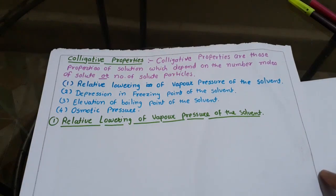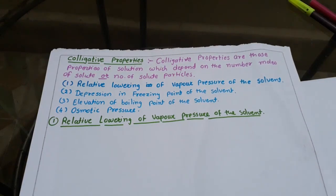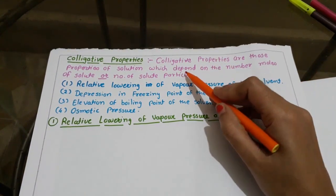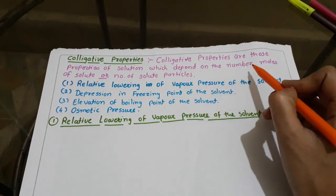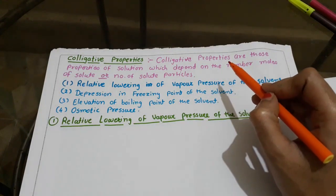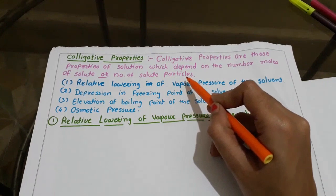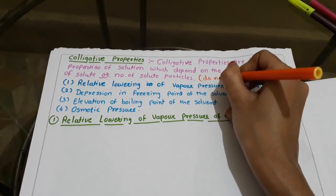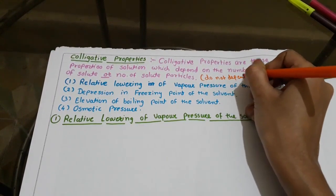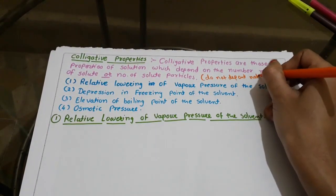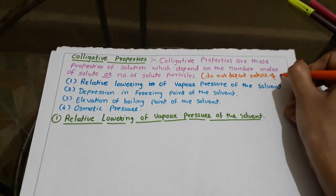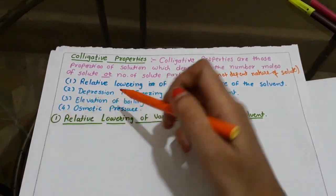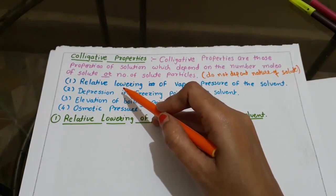In this video we are going to study about colligative properties. Colligative properties are those properties of a solution which depend on the number of moles of solute or the number of solute particles. These colligative properties do not depend on the nature of the solute.